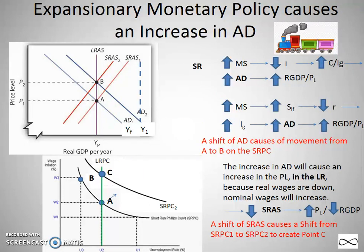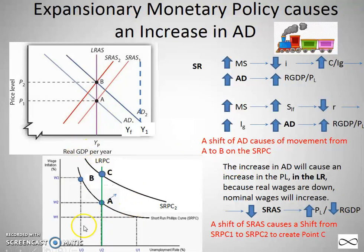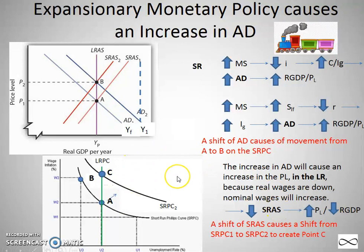But remember what happens in the long run. If you're at the increased AD point, in the long run people negotiate their wages. With an inflationary gap, people ask for and receive higher wages, which decreases the SRAS. That decrease in SRAS causes an increase in the SRPC, shifting it to the right. You end up at point C — a new intersection of the SRPC and the LRPC — back at full employment unemployment rate U2. In the long run, negotiating wages shifts the SRAS, which then also shifts the SRPC back.